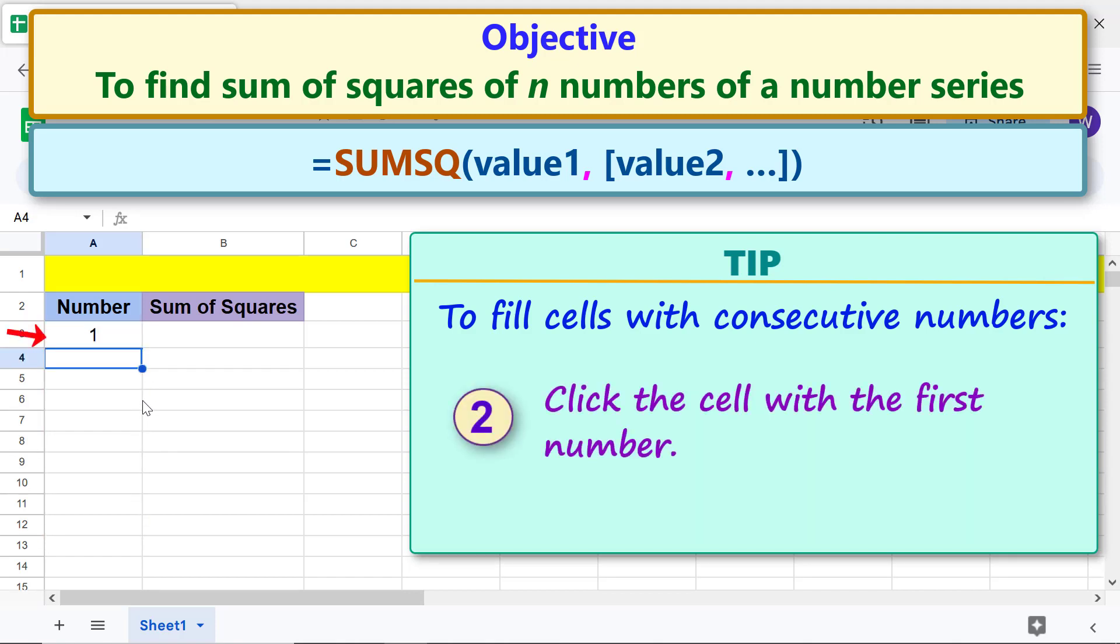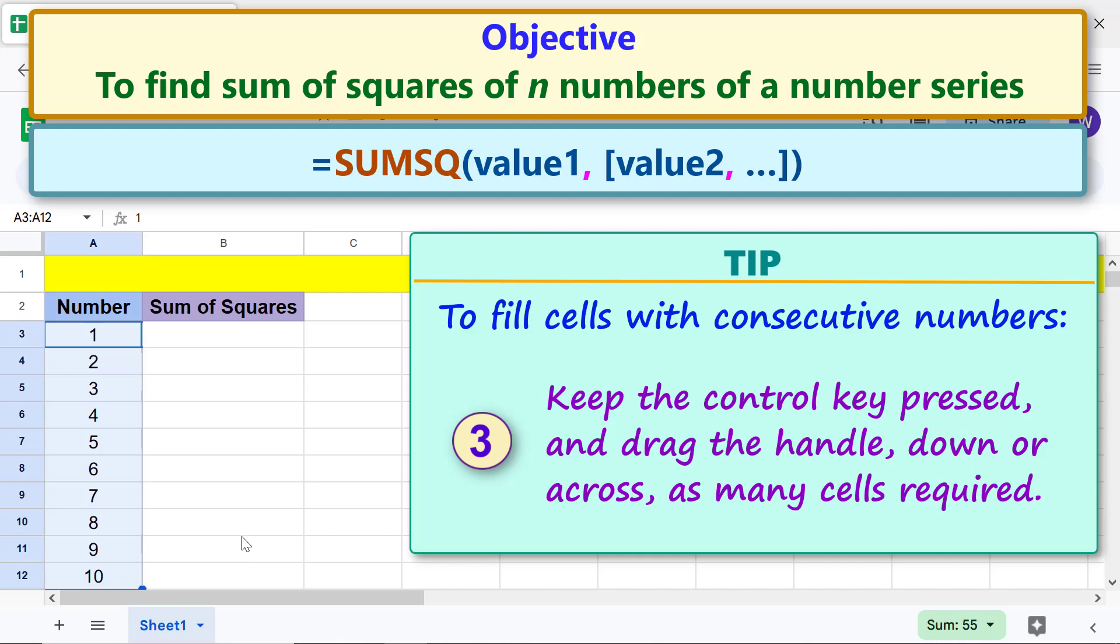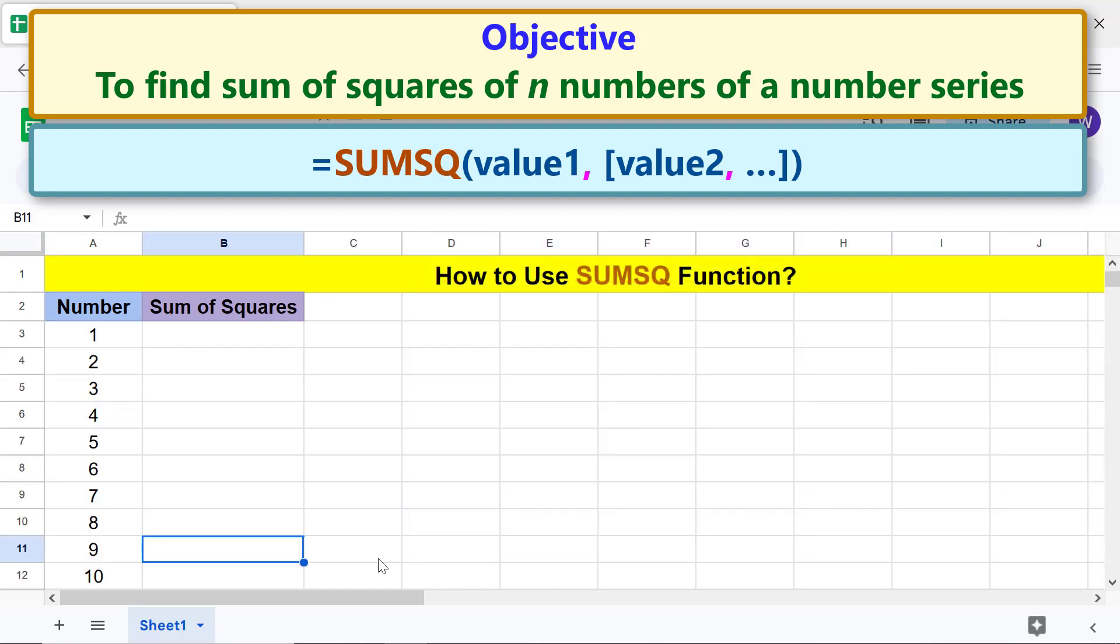Click the cell with the first number. Keep the control key pressed and drag the handle down or across as many cells as required.